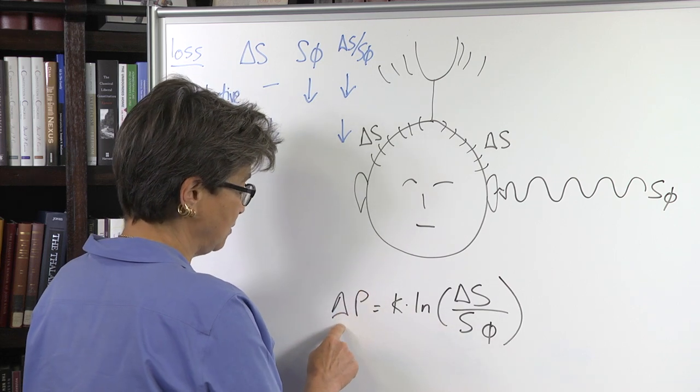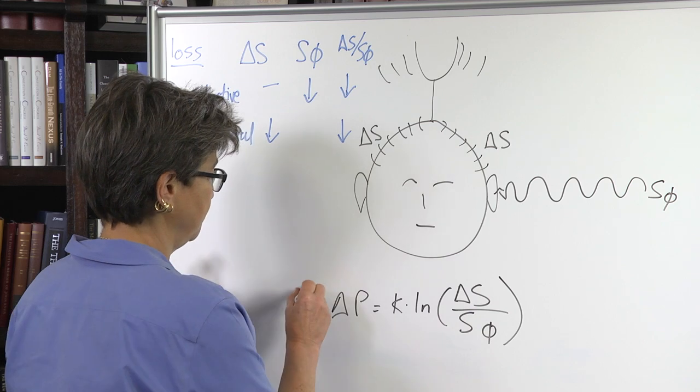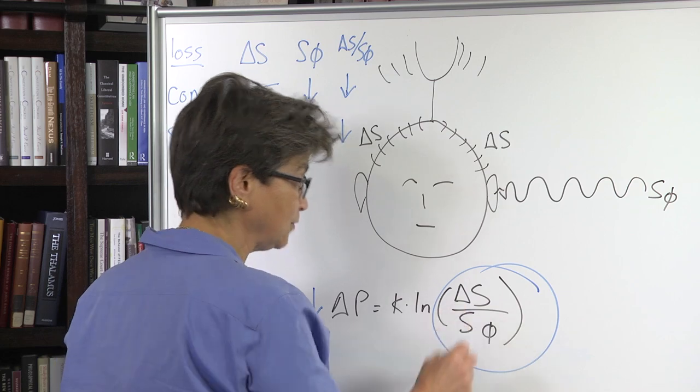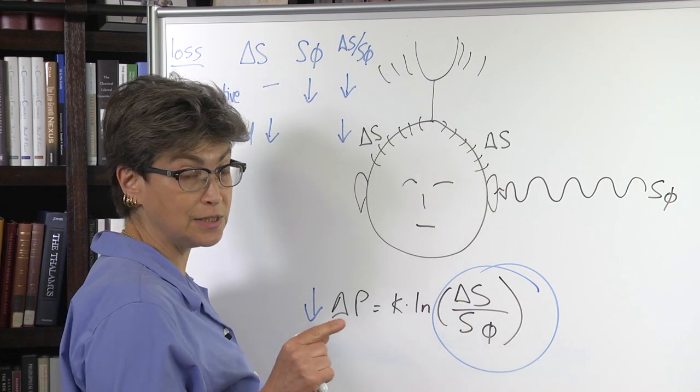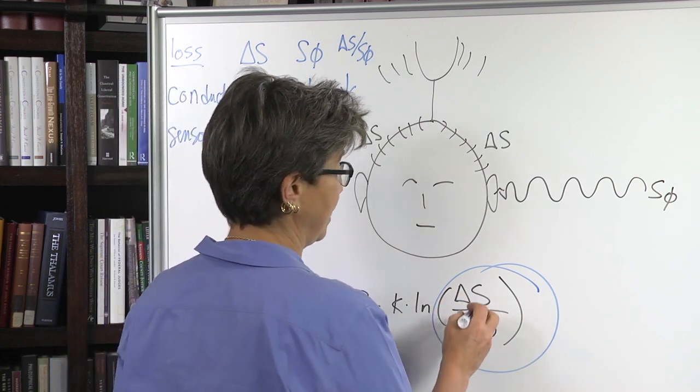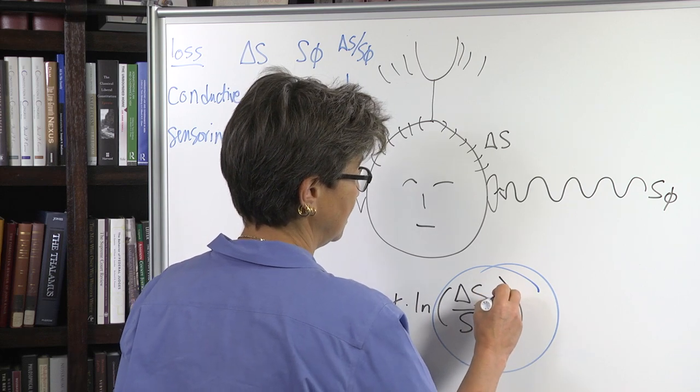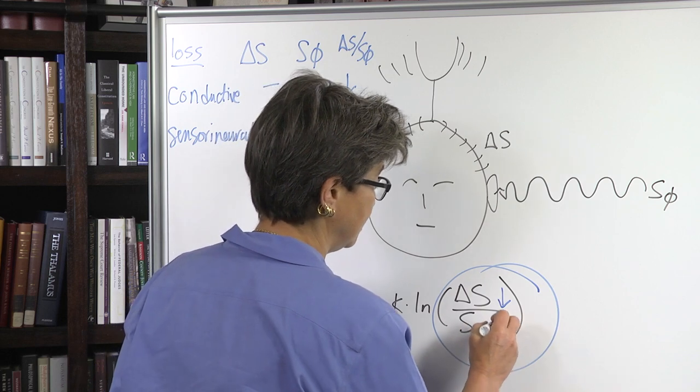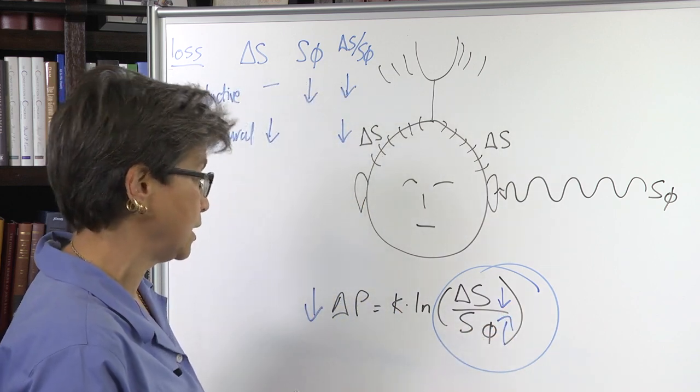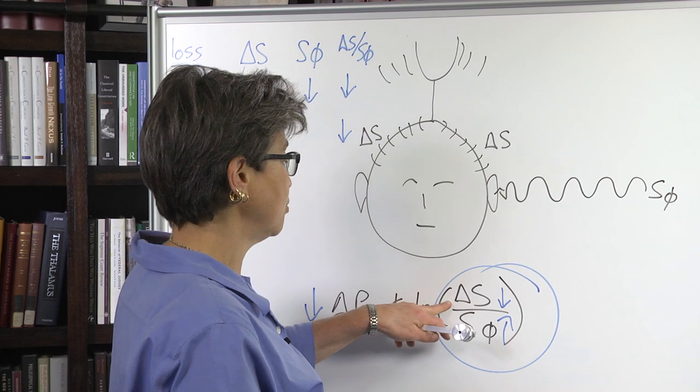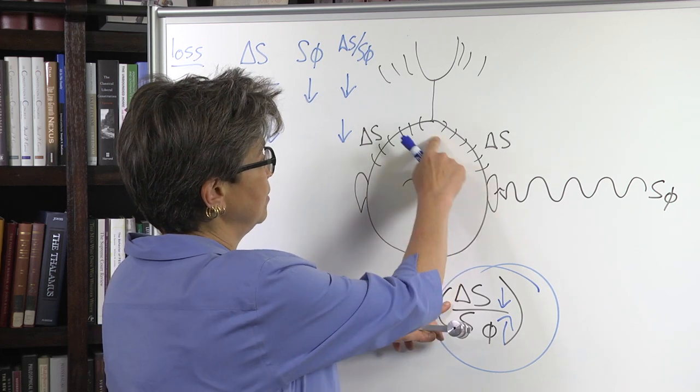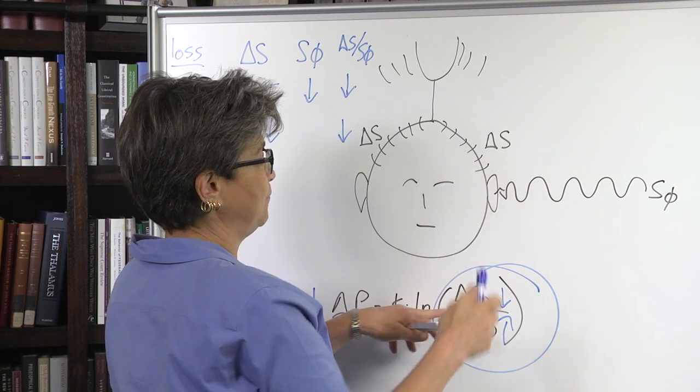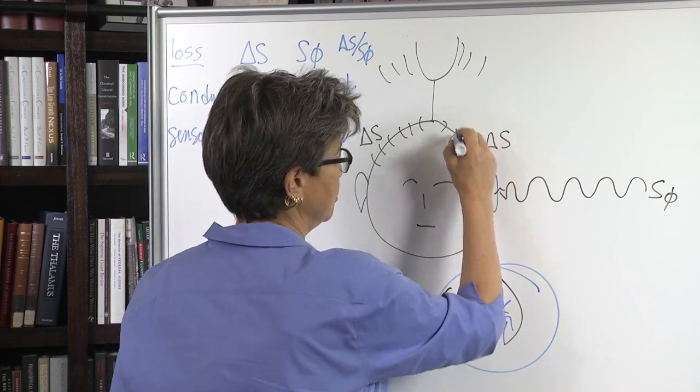In order for this to be decreased, then this value is going to decrease. How can this value decrease? It can decrease in one of two ways: it can decrease because the numerator goes down or because the denominator goes up. How would the numerator go down? Well, the only thing that would change how loud this is is if there's a deficit in sensory neural processing.